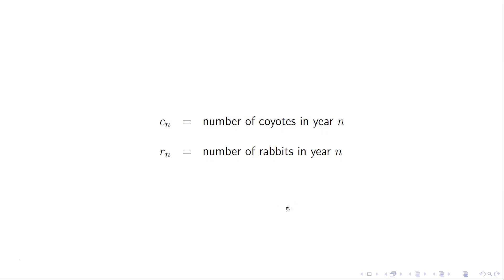So the populations, let's give them some numbers here, cn and rn. Let's let those be the populations in year n, and we'll start at year zero and go to year one, two, three, and so on. The question is going to be what happens to these populations.